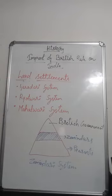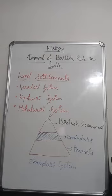Now the land settlements. There were three types of settlements. First, the Ijara Dari system — this is actually a system of auction. According to this system, the highest bidder got the right to collect revenue for a period of five years.